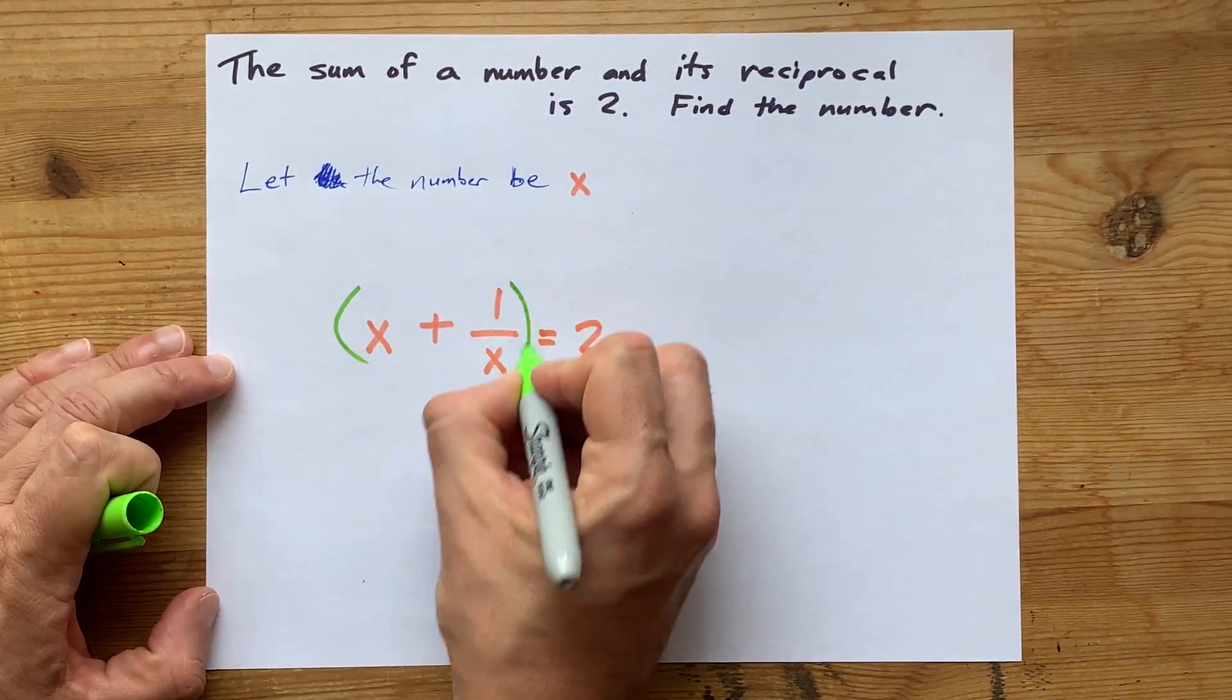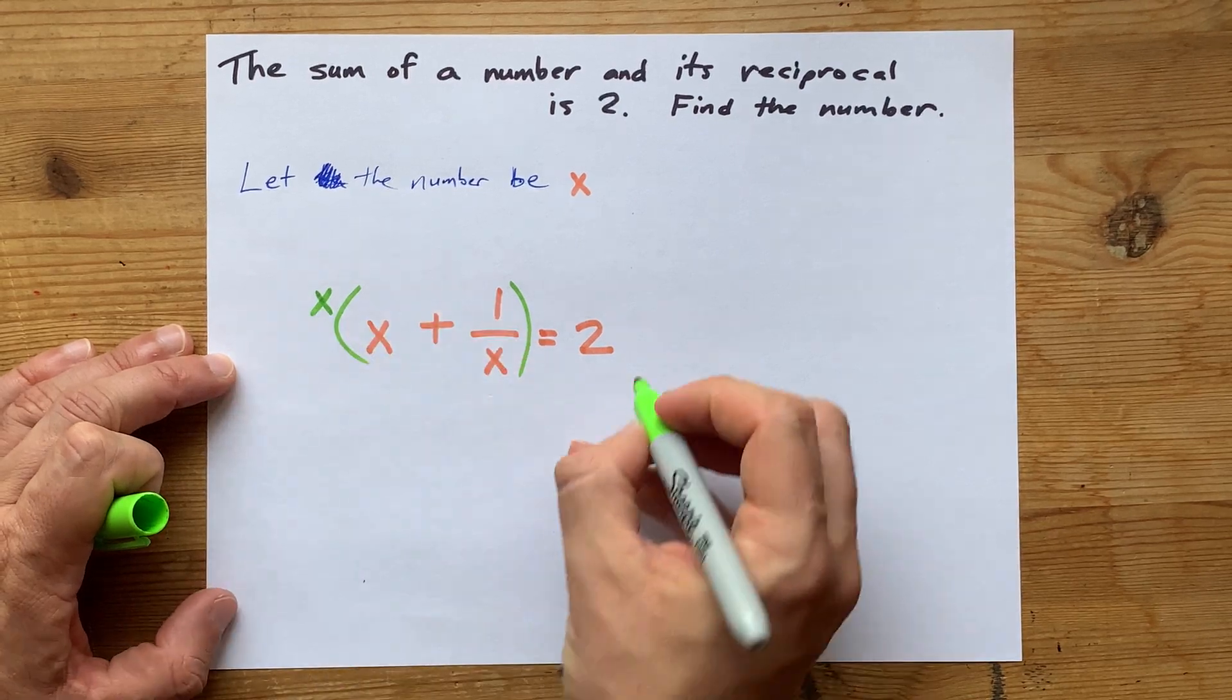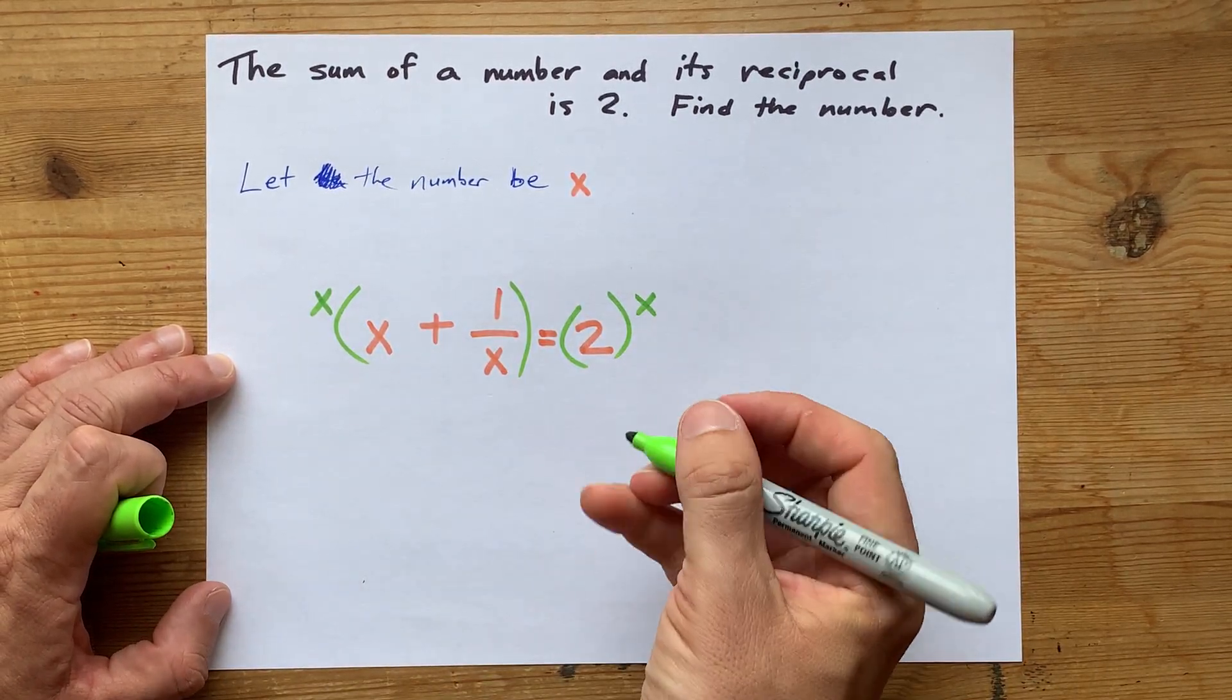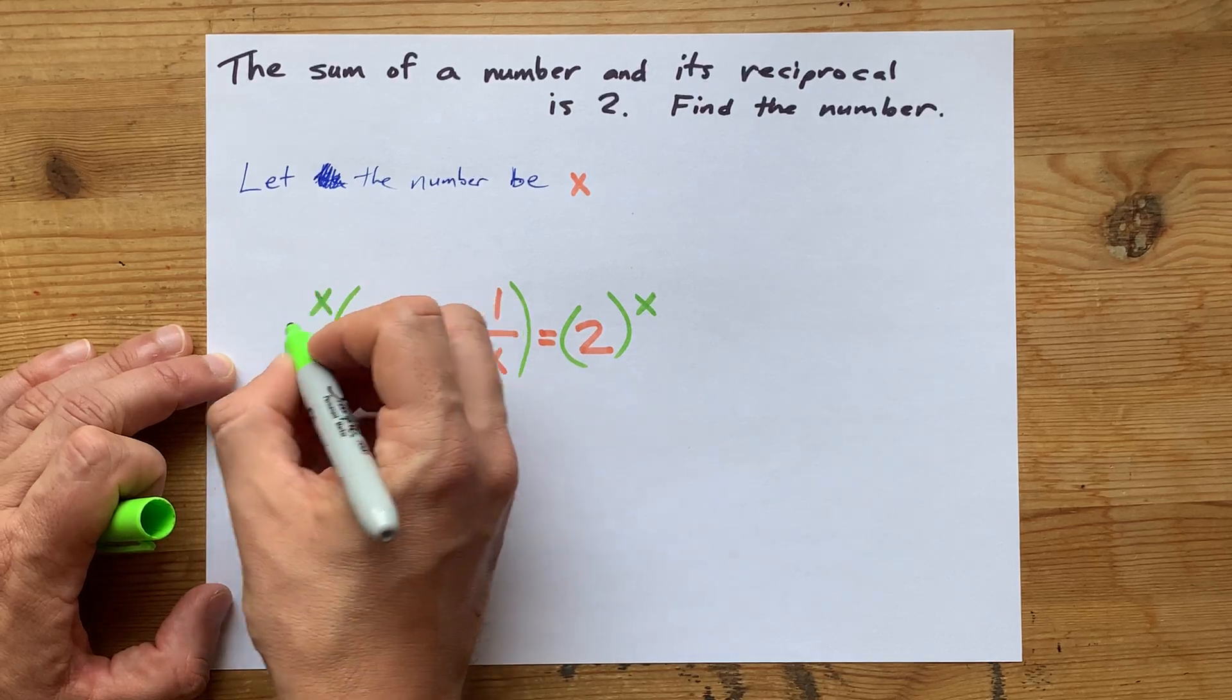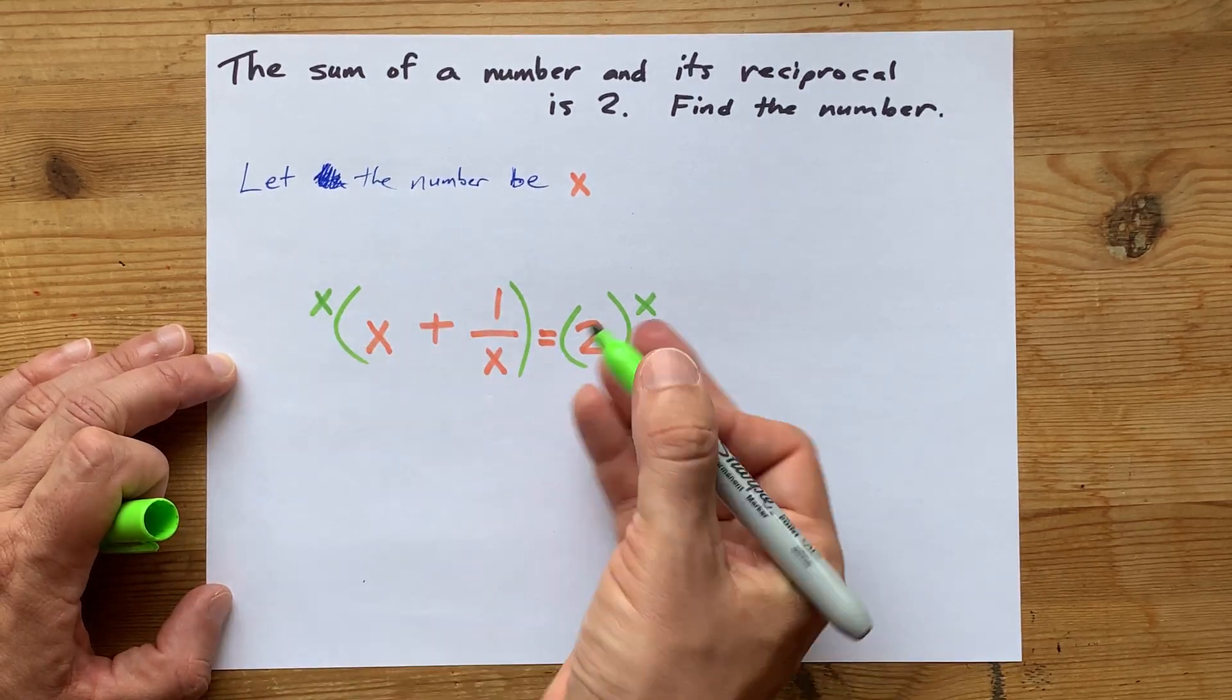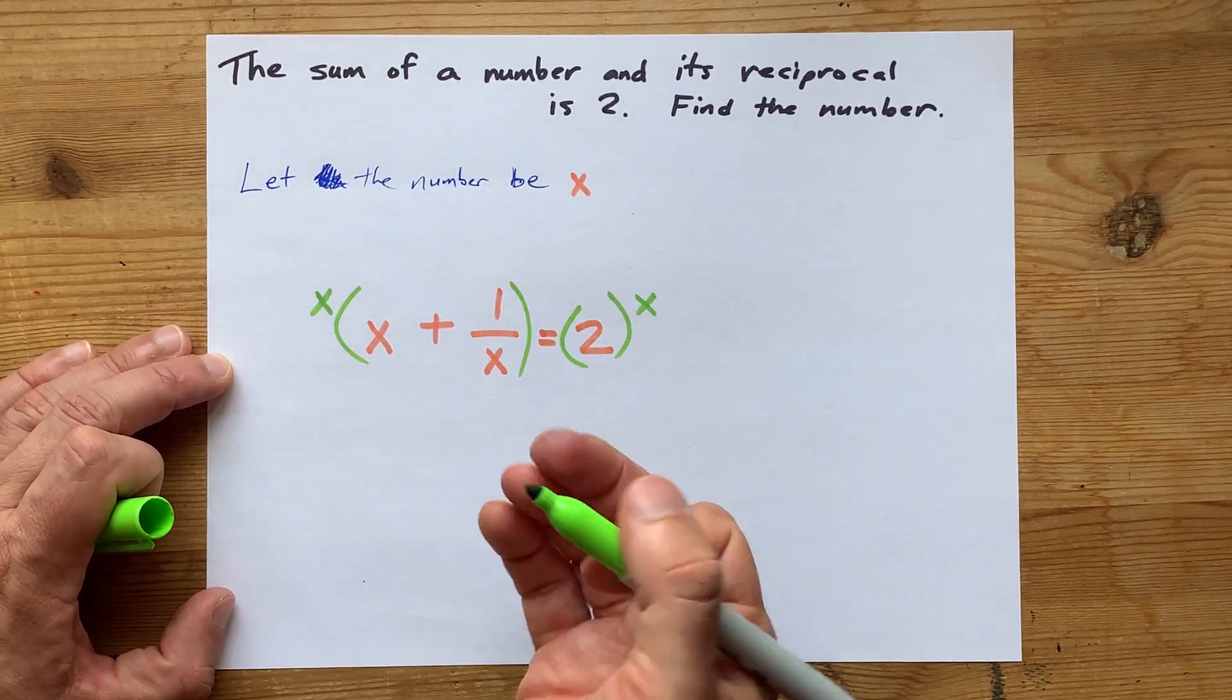which is multiplication. I'm going to multiply both the left and the right by x. Now I haven't done this very well. Those are supposed to be x's, but they're not supposed to be exponents. We're multiplying by those things.